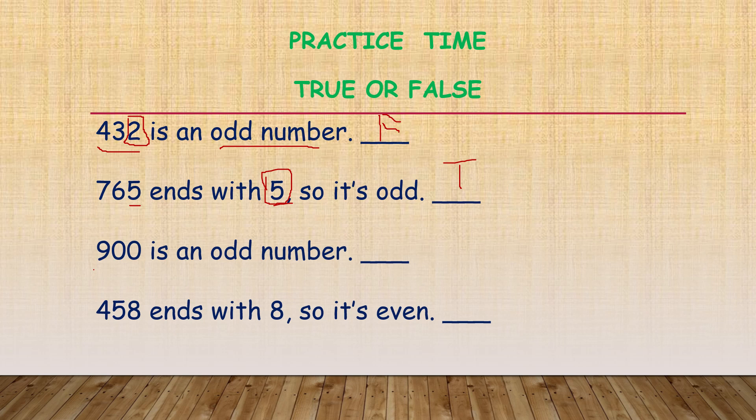Now here, 900 is an odd number. How can you check? Here the end number is 0. 0 means it's even. But here they are telling odd. That's why it's false.